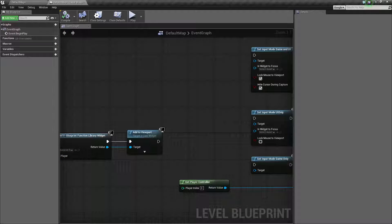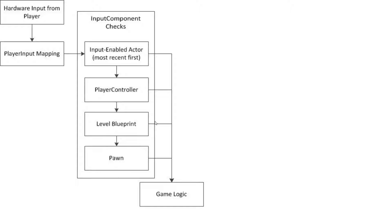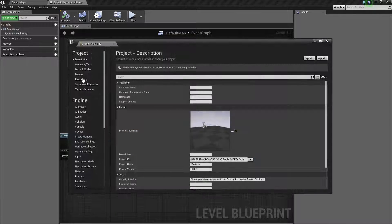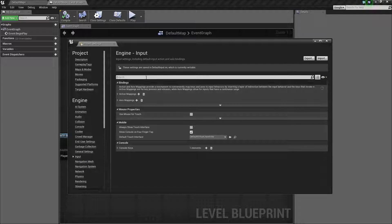By default the game is set — if you don't do anything — to game mode only. That means your player, your controller, your pawn, or your character is going to get the input, do something with it, and then absorb it. This is a map of the default input processing procedure for Unreal Engine. The input comes in, then it goes to the player input mapping — this is where you set up your input, such as if I hit A it means go left, or spacebar means jump. That's what I mean by that right here. This is your input mapping, so it goes from the player's keyboard or mouse input into here.